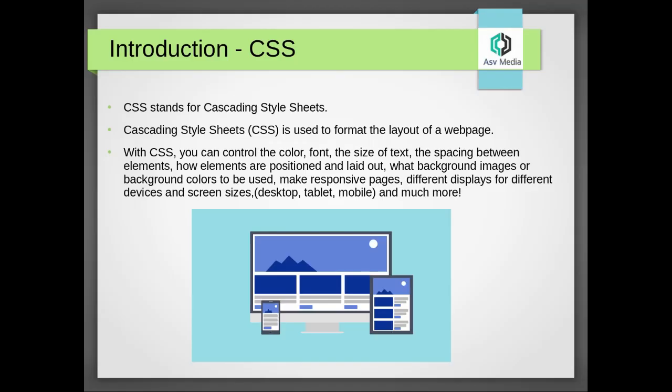So let's start. CSS basically stands for Cascading Style Sheets, which is used to format the layout of a web page. With CSS you can control the color, font, and size of text, and more we will see in this series. The spacing between elements — that is margin, borders, and padding — and how elements are positioned and laid out.